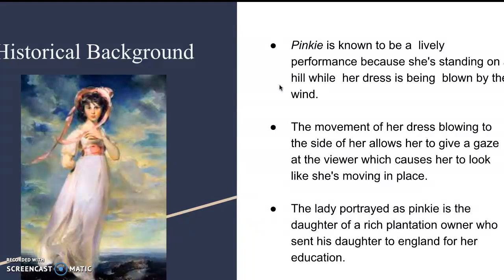There's a lack of objects — it's just sky — so we focus right on her and her dress, which pushes us away, and the blue background makes it look like she's floating and moving around. The lady portrayed as Pinky is the daughter of a rich plantation owner who sent his daughter to England for her education, but before sending her to England, he also abandoned the family, leaving her, her mother, and her brother to be raised alone. There's no exact explanation of why he did this, as he was a wealthy plantation owner who owned many slaves.